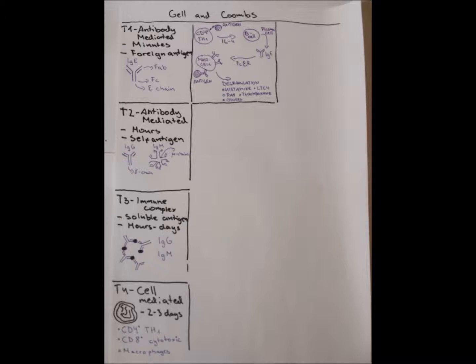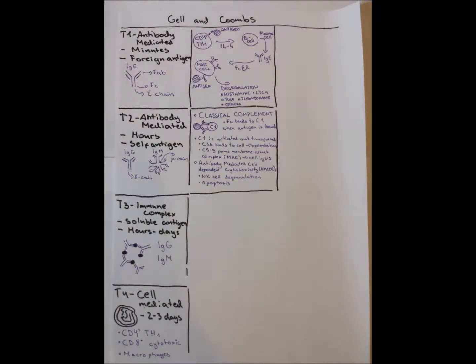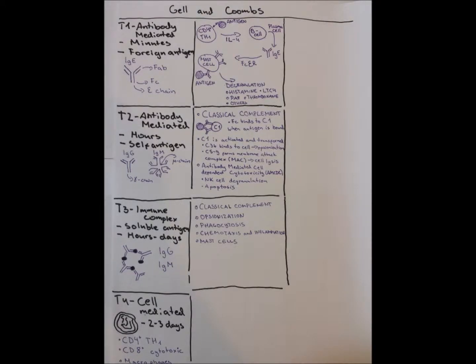Type 2 hypersensitivity reaction usually involves the classical complement mechanism, where the Fc fragment binds to complement C1 protein, which becomes activated and cleaved into various complement proteins. Most important are C3B, which binds to cells and causes opsonization by macrophages, and C5 through 9, which form membrane attack complexes that cause cell lysis. Another mechanism is antibody-dependent cell-mediated cytotoxicity, mediated by natural killer cells that degranulate and cause apoptosis.